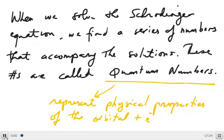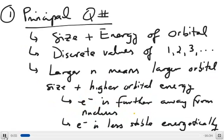In this video, we're going to discuss the solutions to the Schrödinger equation, which result in a series of numbers — what we call quantum numbers. The quantum numbers basically represent the physical properties of the orbitals themselves, as well as the electrons that occupy the orbital.